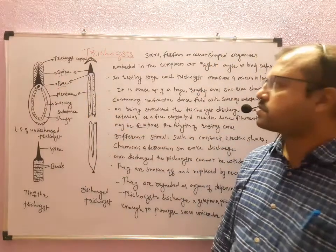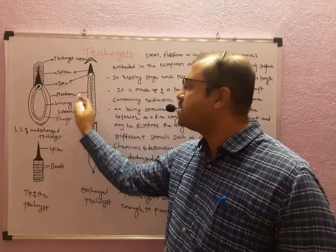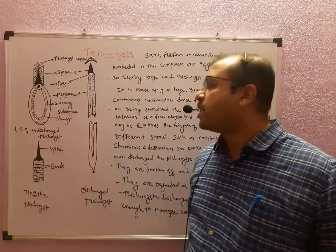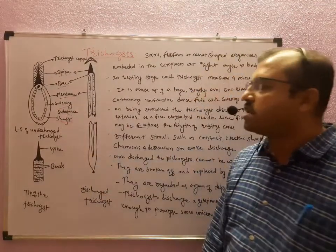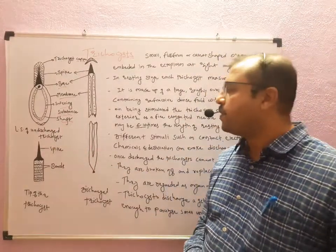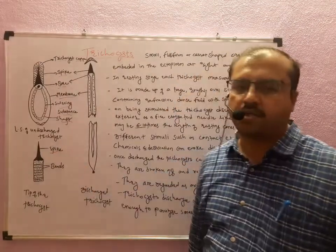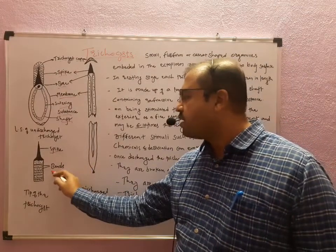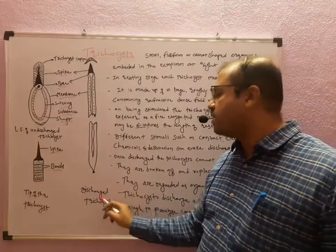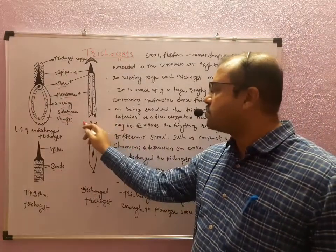Again, it is having the lowermost sides or innermost type that is membrane, and inside the membrane it has the swelling substance and shaft also. So these are the parts which we have seen in undischarged trichocyst. In the tip of the trichocyst, a pointed spike is present, and at the base of this spike, different dark and faint bands are present. This third figure shows the discharged trichocyst where the trichocyst is broken off.